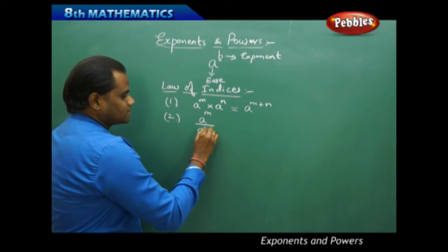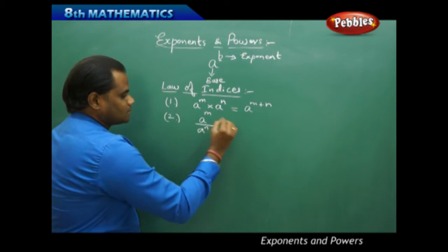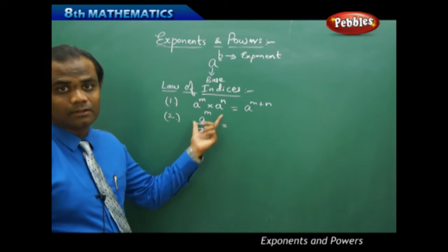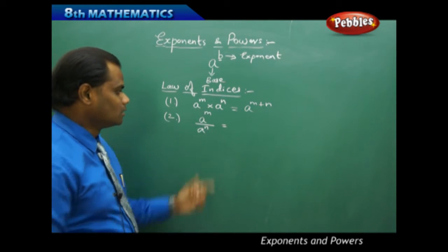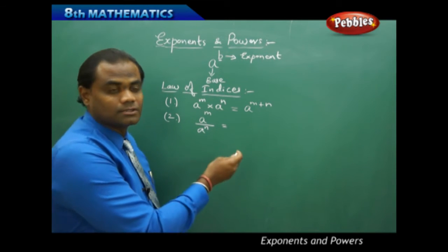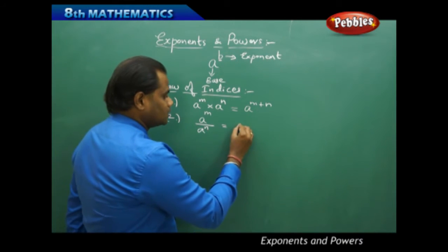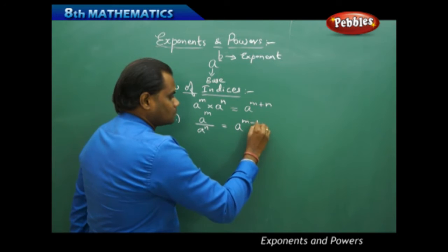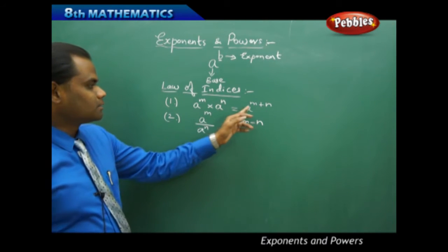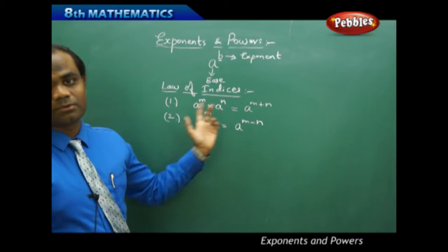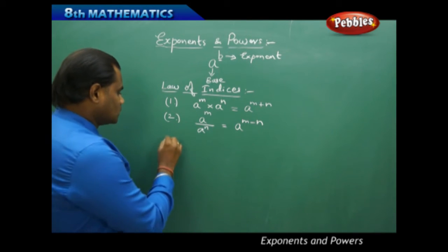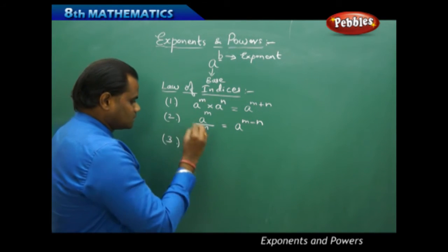The second law of indices states that when I have a power n divided by a power n — when the bases are equal under division — the powers are subtracted as numerator minus denominator. So under division we subtract the powers, provided the bases are the same.